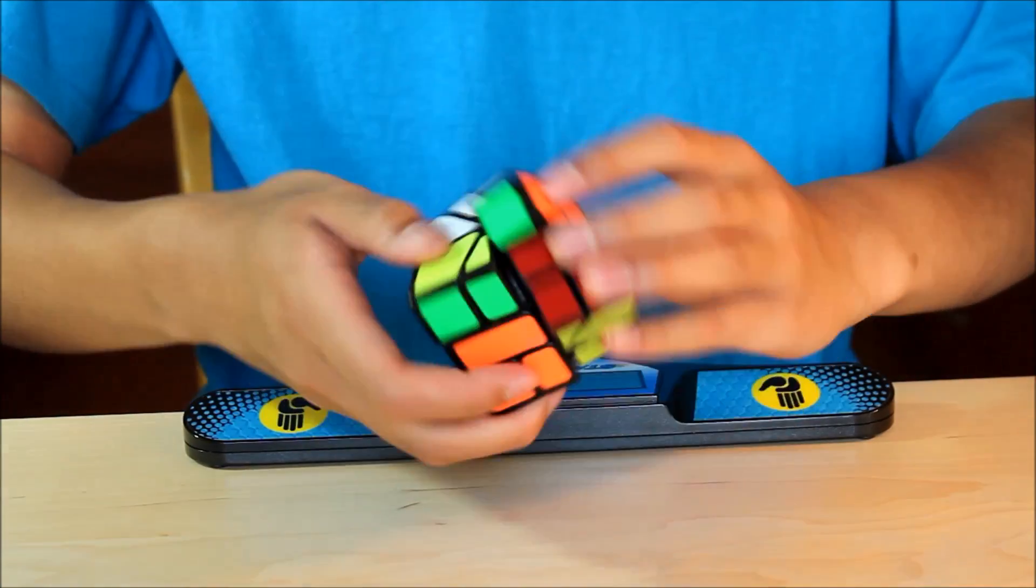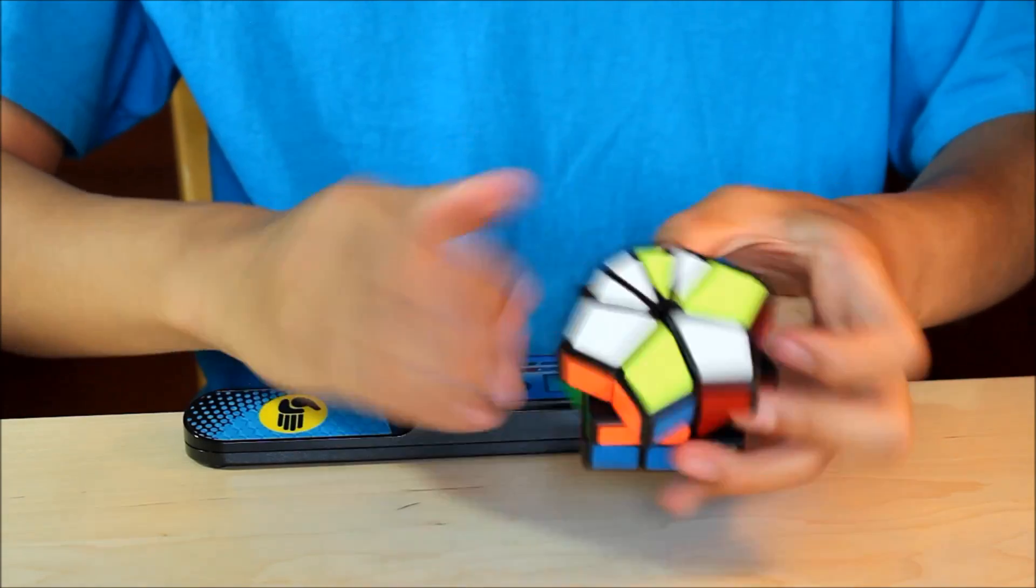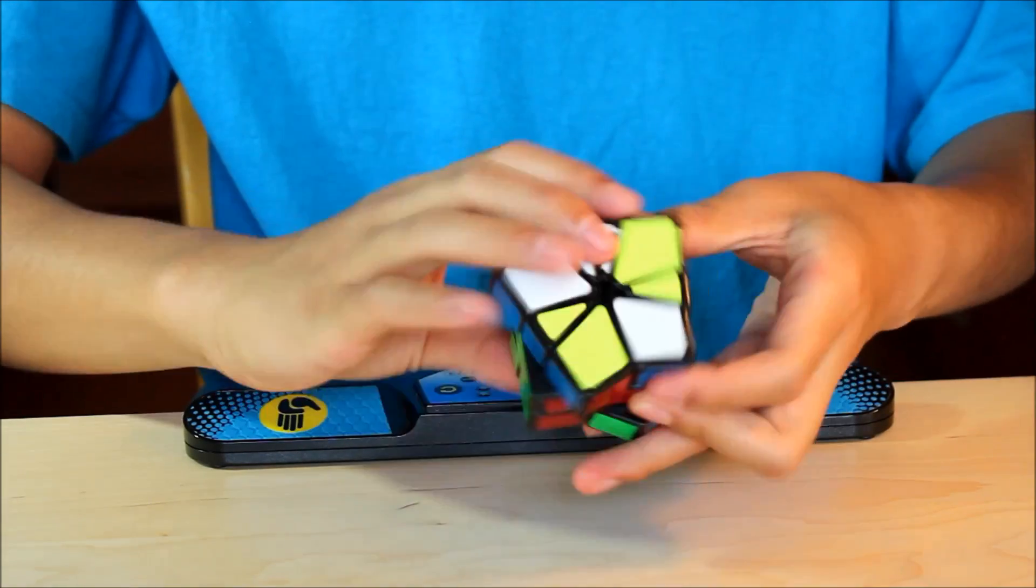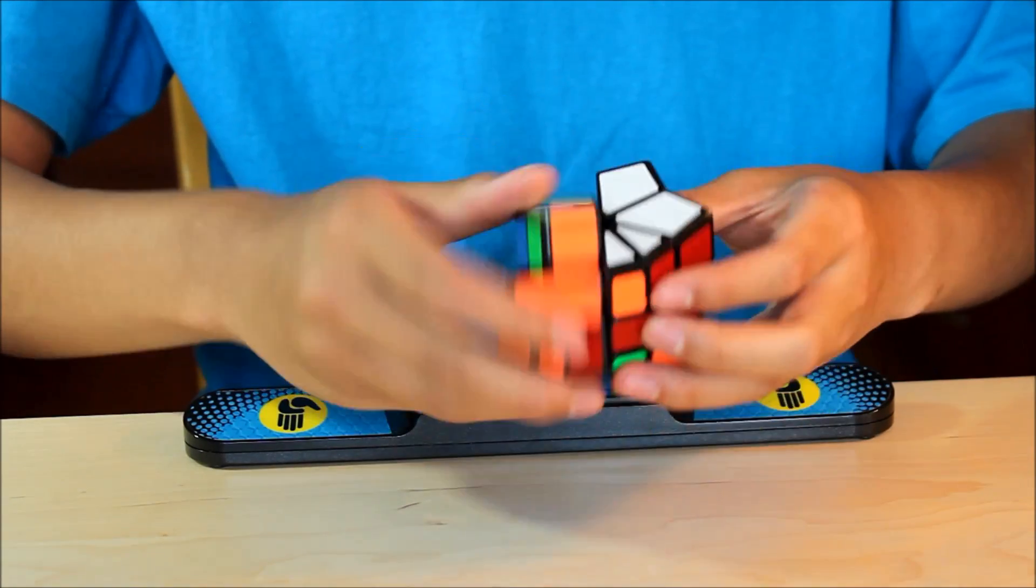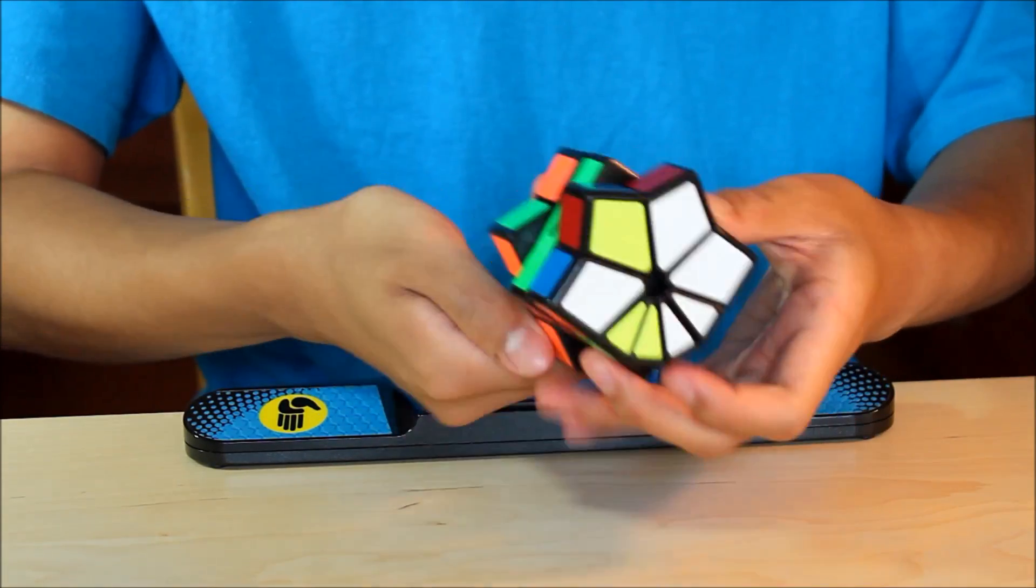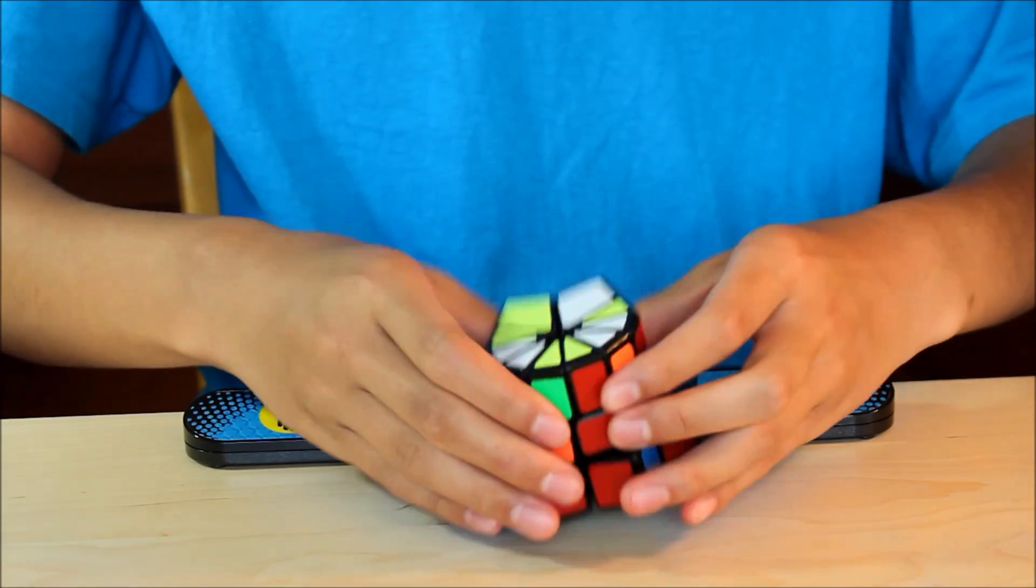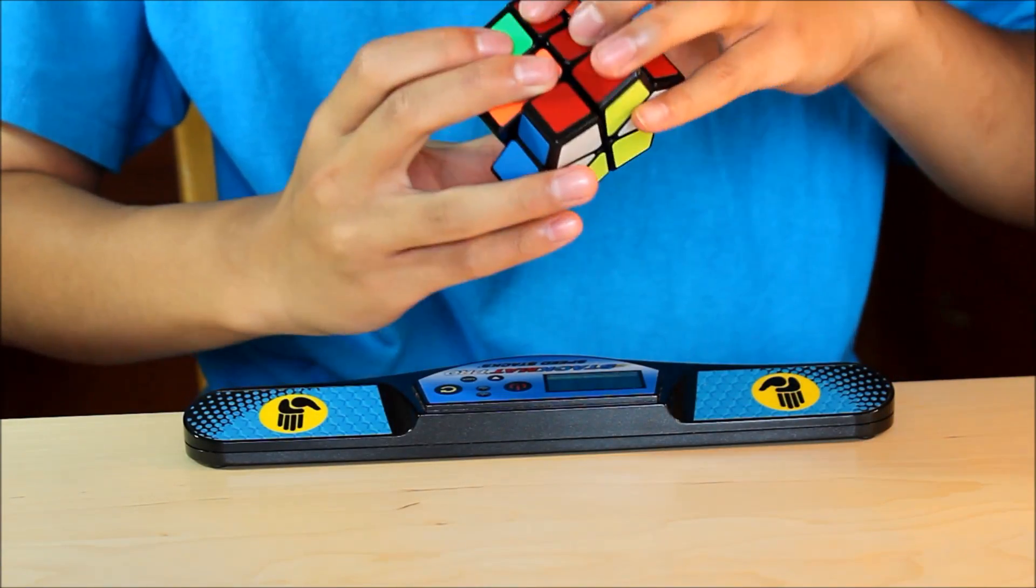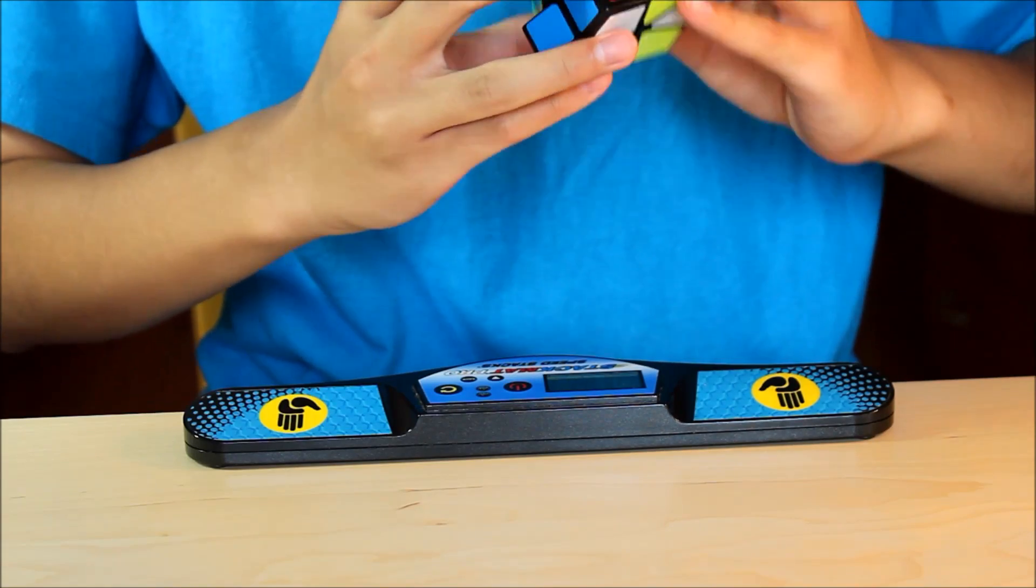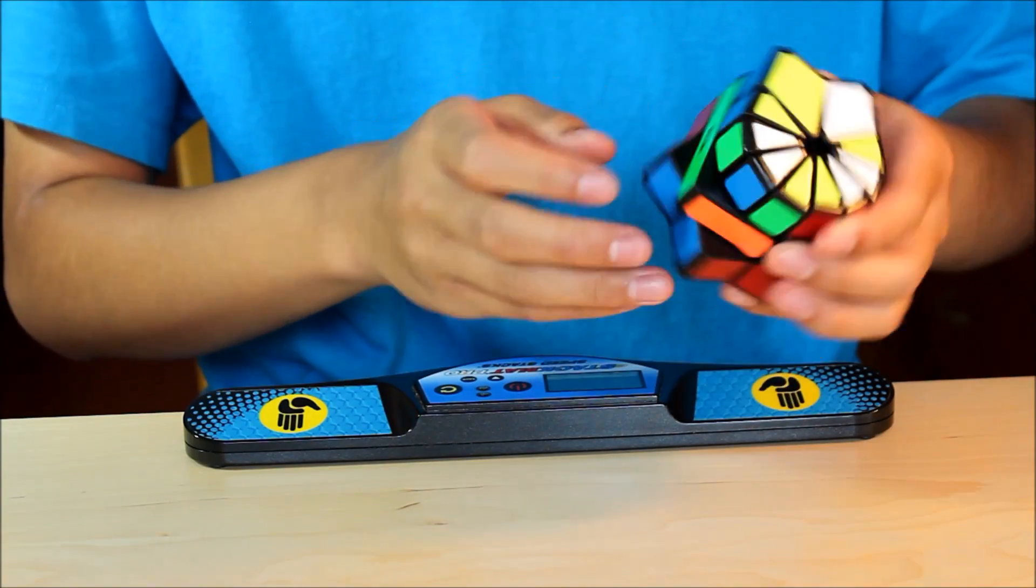All right, from here, the only thing left to do, now that you know how to recognize if there's parity or not, is to learn all the algs. Because every time you get parity or non-parity, you have to do a specific alg for that case. So that way you can always avoid parity. So all the algs will be in the description. It's in a Google Sheets thing.